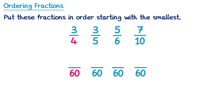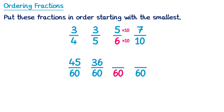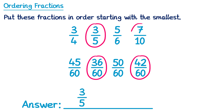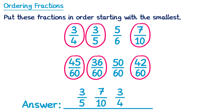How do we get from 4 to 60? Multiplied by 15. So we multiply the 3 on top by 15, and 3 multiplied by 15 is 45. For 3 fifths, from 5 to 60 is multiplied by 12, so 3 times 12 is 36. For 5 sixths, from 6 to 60 is multiplied by 10, so 5 times 10 is 50. And for 7 tenths, from 10 to 60 is multiplied by 6, so 7 times 6 is 42. Writing the answer line from smallest to largest: 36 over 60 which was 3 fifths, then 42 over 60 which is 7 tenths, then 45 over 60 which is 3 quarters, and finally 50 over 60 which was 5 sixths.